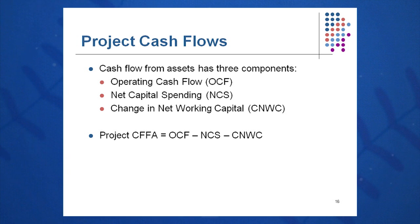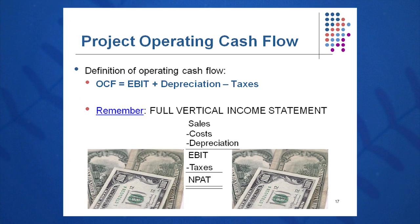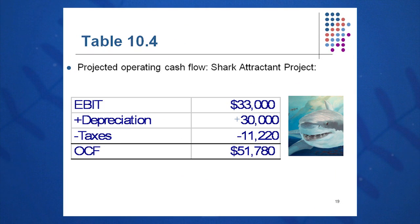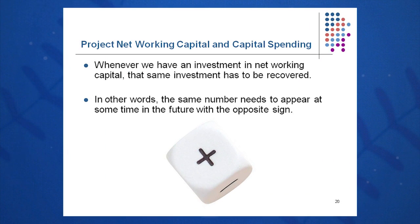We'll calculate CFFA as OCF minus NCS minus CNWC. We get that OCF by building a full vertical income statement. Always build your income statement all the way down to NPAT so we can calculate OCF several different ways. The cash flow OCF is $51,780: EBIT of $33,000 plus depreciation of $30,000 added back as a non-cash expense, minus taxes of $11,220. We'll get this $51,780 each year for three years. Working capital is negative at time zero, and we'll recapture that working capital at the end of year three by selling off remaining product and collecting accounts receivable.